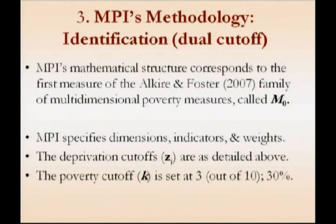The methodology James has presented uses simply the M0, the adjusted headcount measure of our class of measures. What the MPI does is clearly answer the questions James put forward. It specifies dimensions, indicators, cutoffs, weights, and the value of K, the poverty cutoff.